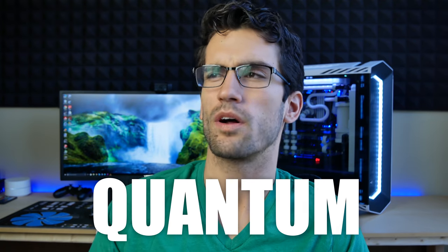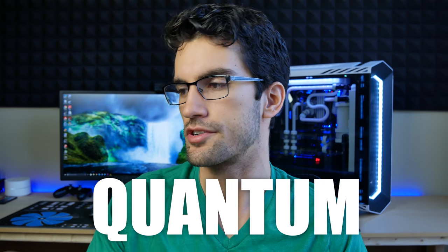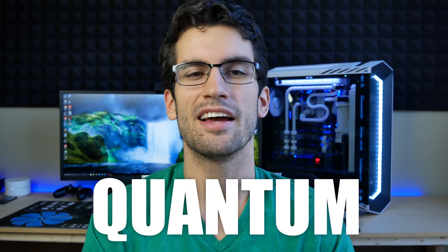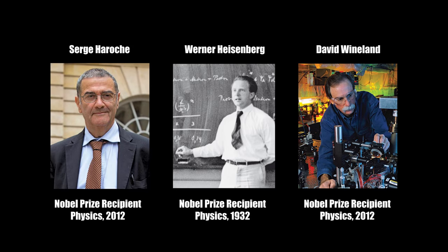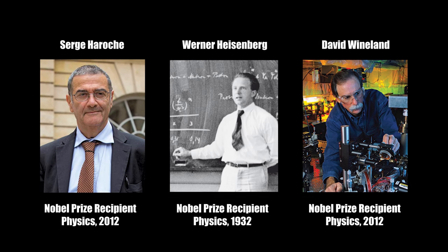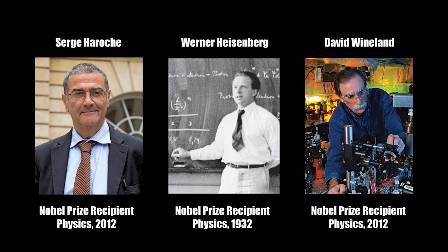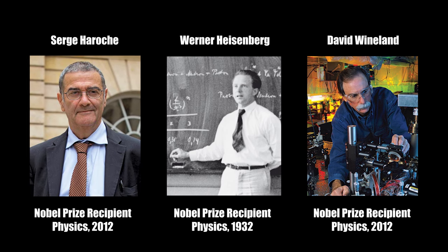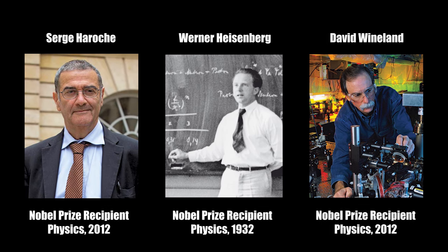The word 'quantum' in phrases like quantum mechanics and quantum physics literally just describes the energy states of very small particles. The reason we've only started using this word in the past half century or so is because we never had tools small enough and precise enough to measure the energy states of things like electrons, photons, and even whole atoms. But thanks to research done by folks like Werner Heisenberg, Serge Hirosh, and David Weinland, we now know that it also describes how an electron can be in two places at once. This is from where quantum computing is derived.